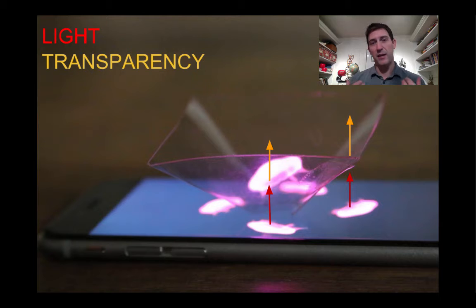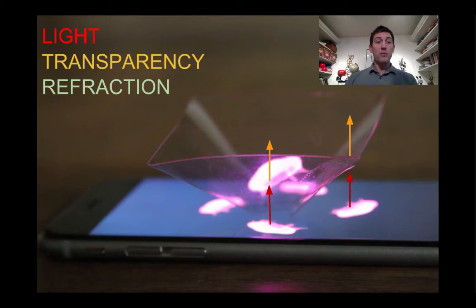Now it's only partially transparent because obviously some of that light is coming back towards us, so we can see. Some of the light is headed up through the plastic and going off into space, but it also exhibits refraction.